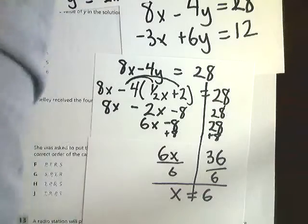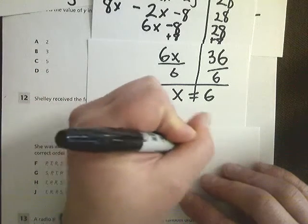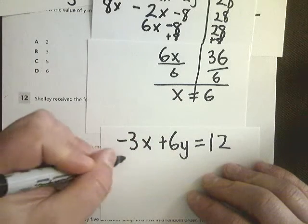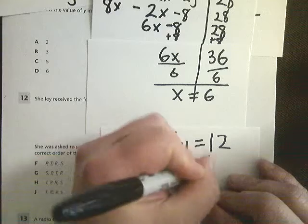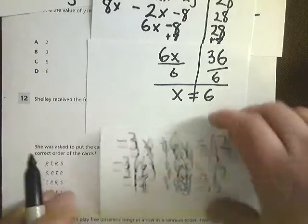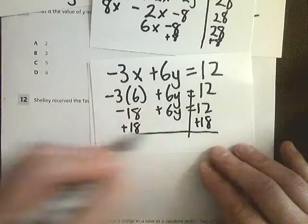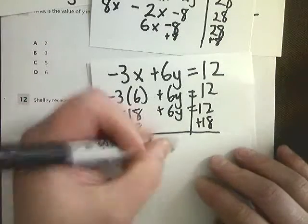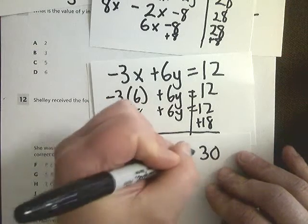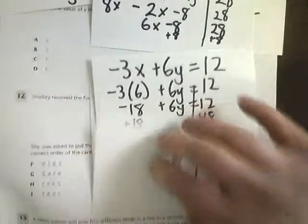All I need to do to get the answer from here is just go back into either one, really. Let's go back into the original. I'm going to plug in 6 for my x, and then just solve for y. This would be negative 18. I need to add 18 to both sides. Gives me 30. Divide by 6. y is equal to 5. So the answer to number 11 is C. As you can see, there it is.